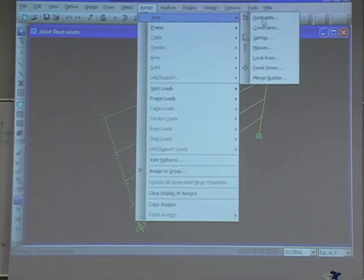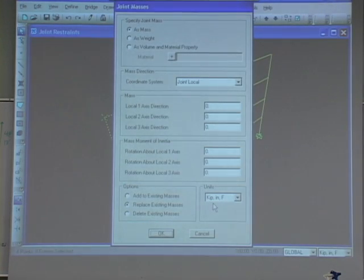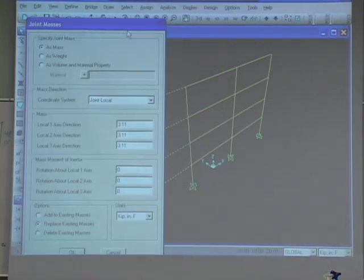Now we can take the masses for each floor and distribute them to every joint at each floor, or for the sake of simplicity we're just going to assign it to the left node at each floor. We're going to assign 3.11 and we're going to use the local one axis direction because that's the x direction. And then we're just going to put it in all of the directions just to be safe, similar to how we did the modification factors so that we don't have to worry about which direction's which.